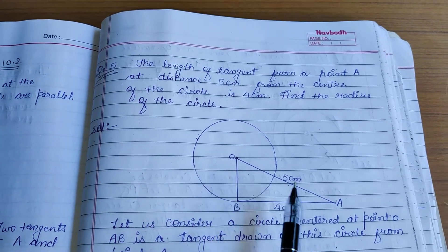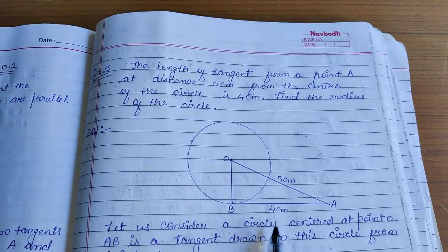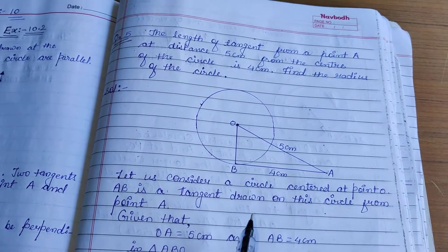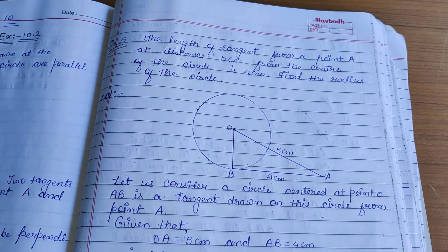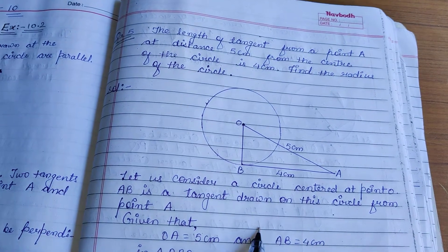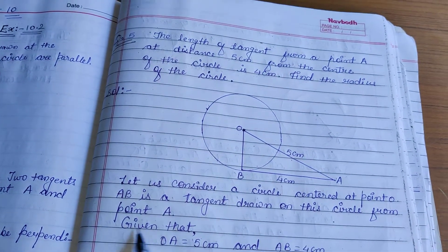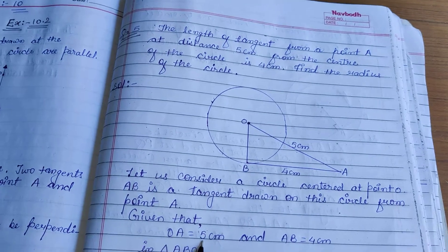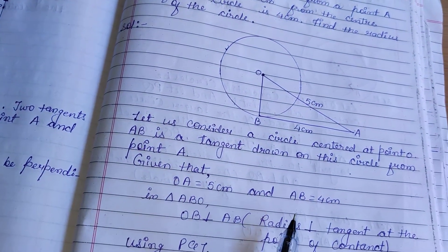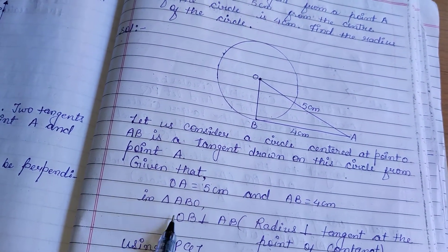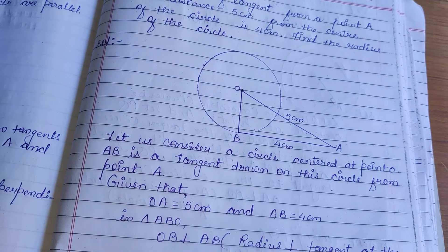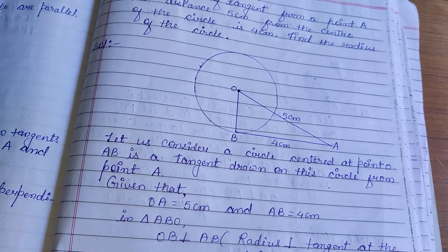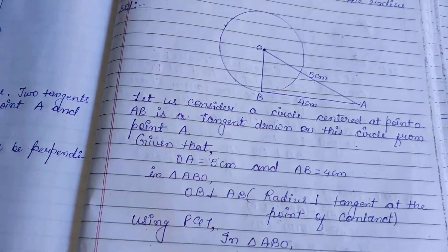First we draw the diagram. One side is 5 cm and the other side is 4 cm. Let us consider a circle centered at point O. AB is a tangent drawn on the circle from point A. Given that OA equals 5 cm and AB equals 4 cm. In triangle OAB, OB is perpendicular to AB because the radius is perpendicular to the tangent at the point of contact. Using the Pythagoras theorem.